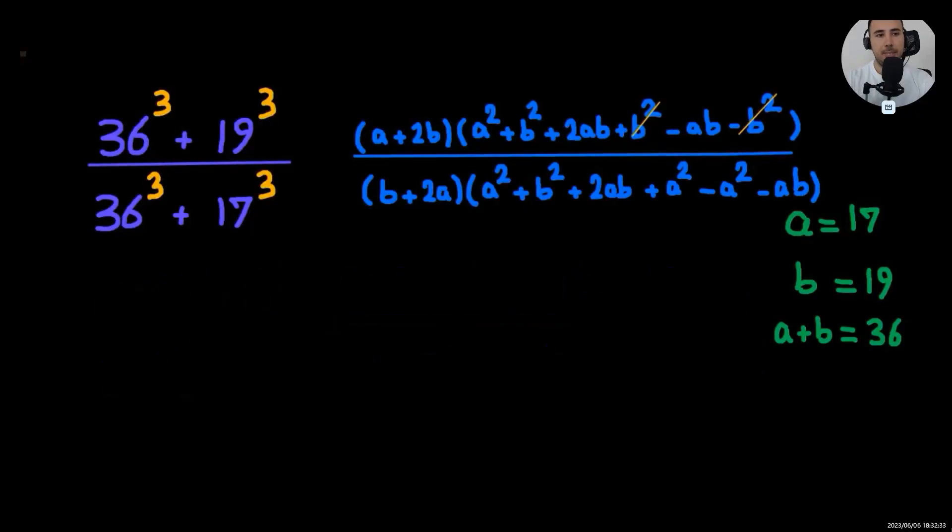Now as you see, b squared and b squared will cancel, 2ab minus ab, one ab is left. Same process, repeat. Now let's see what remains after simplifying everything. It's going to be a squared plus b squared plus ab.